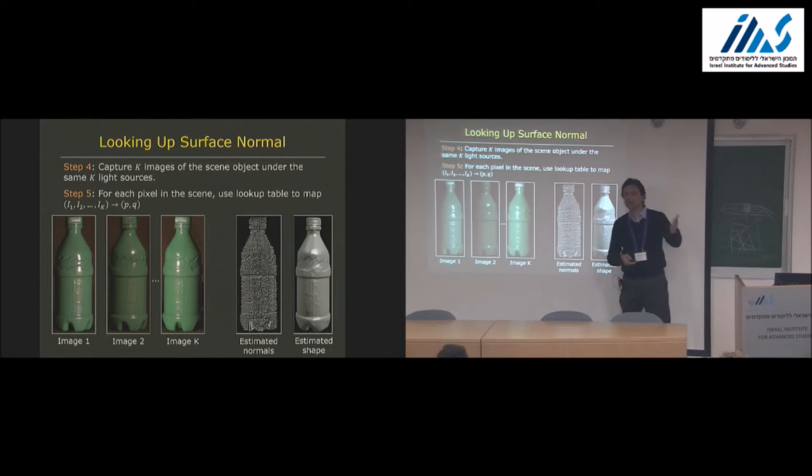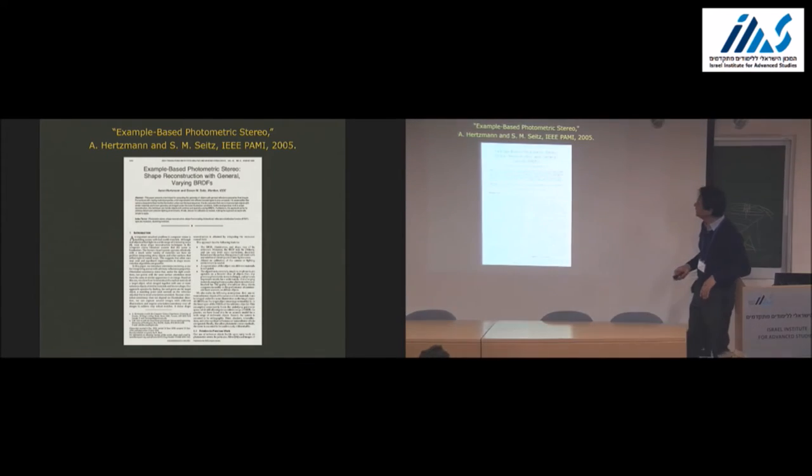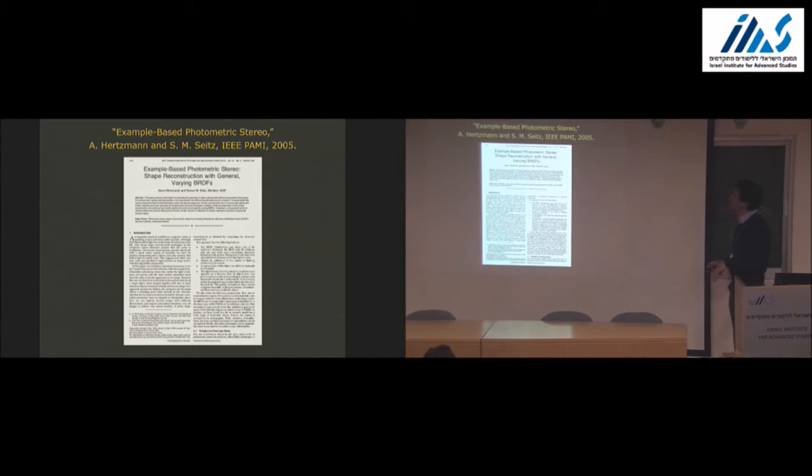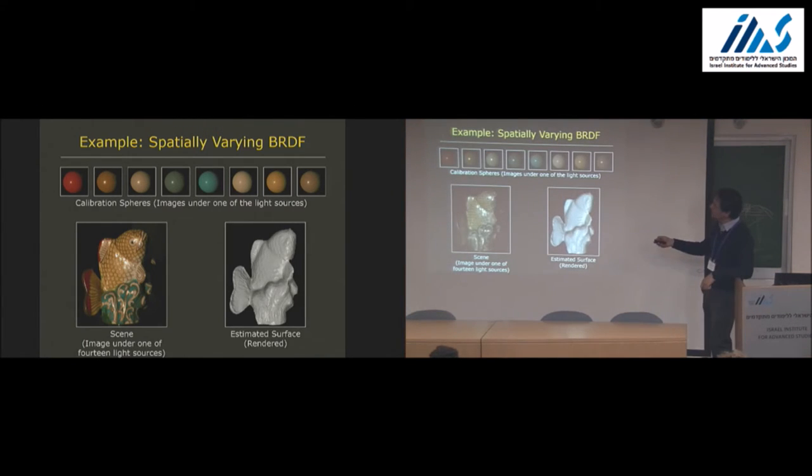This idea was taken one step further by Hertzman and Seitz. In this case, what they said is it's not one paint - you might have all kinds of materials, spatially varying reflectance properties on the surface itself. So what they said is if you have all the paints you've used, you can create all these lookup tables. At each pixel, not only can you ask what the normal is, you can also figure out what the material is that was used at that point. That allows you to recover this kind of shape information.